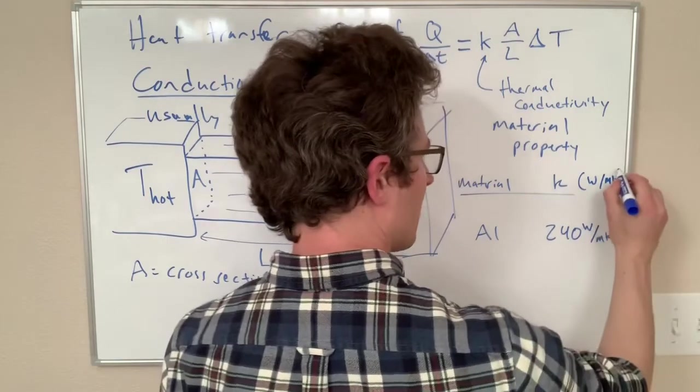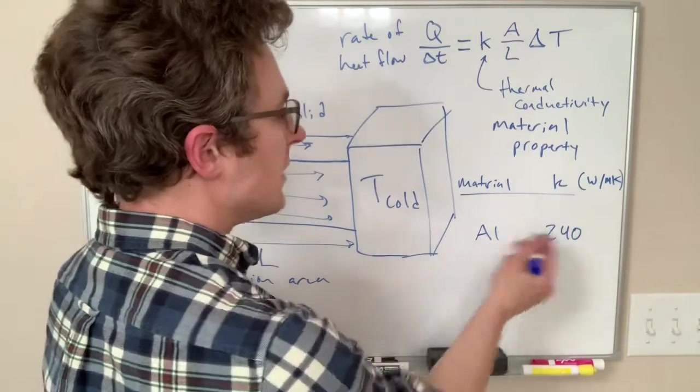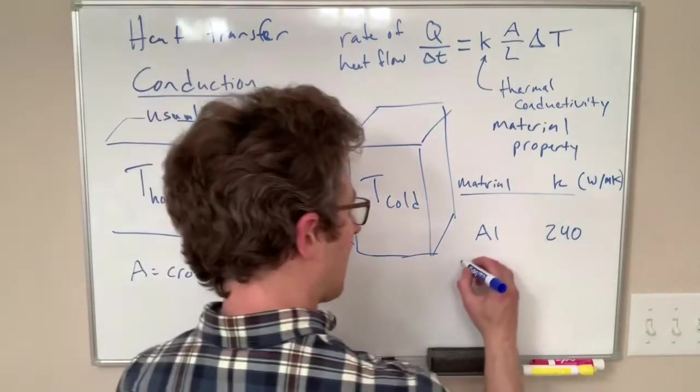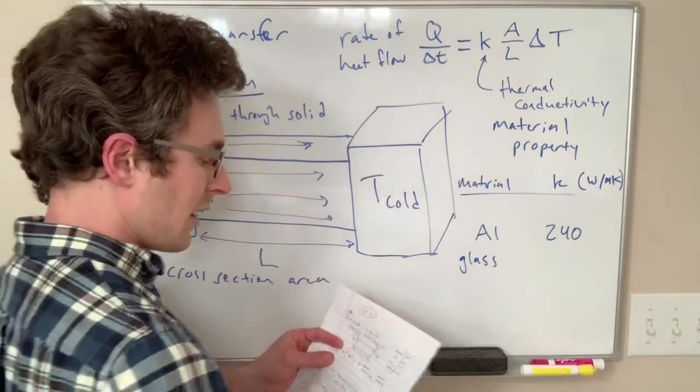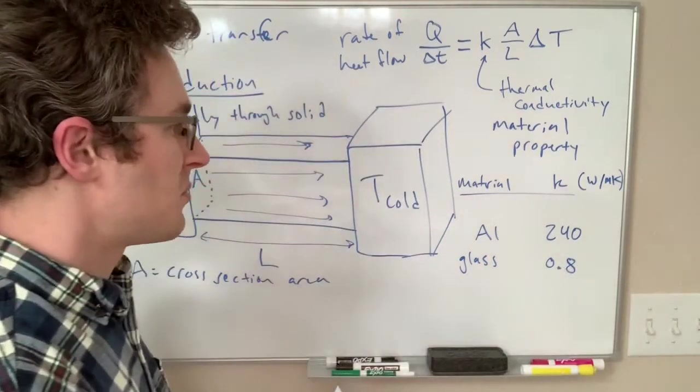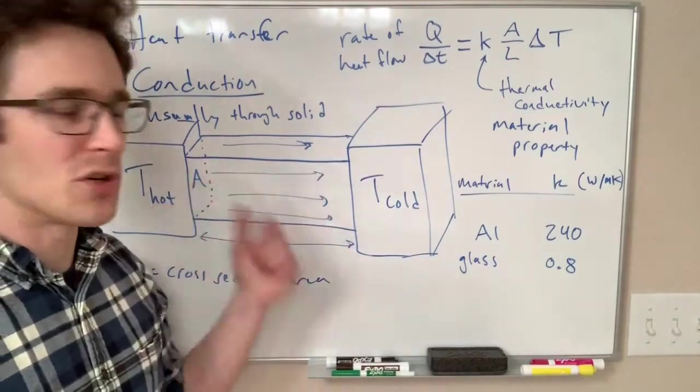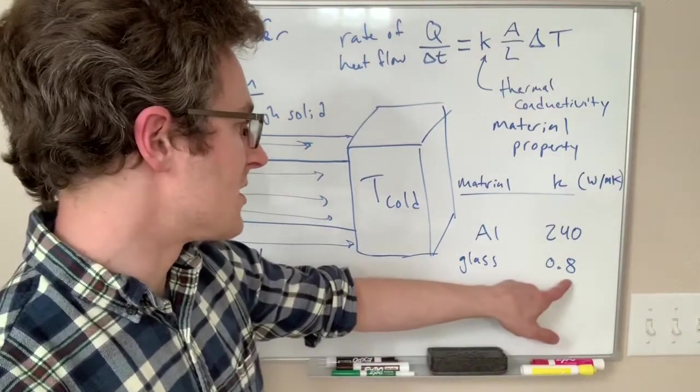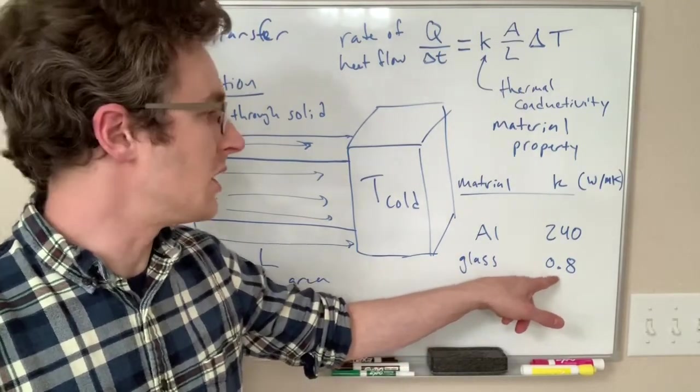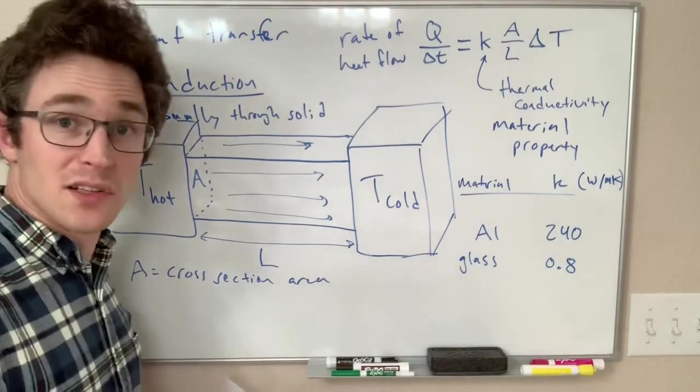So that's how easily heat flows through aluminum. It is more difficult for heat to flow through glass, so glass has a much lower value—glass has a thermal conductivity of 0.8. So the same sized piece of glass between the same two temperatures is going to only flow one three hundredth as much heat as the same piece of aluminum. So glass is a better thermal insulator than aluminum.